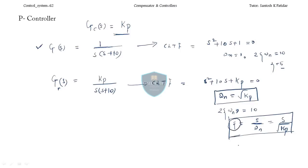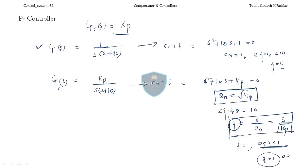If you keep zeta equal to 1, the system will be critically damped. If zeta is in the range 0 to 1, it will be underdamped. Zeta greater than 1 is overdamped. The system is currently overdamped, but you can make it underdamped or critically damped because everything depends on Kp, and Kp is in your hand. So you can change the system.